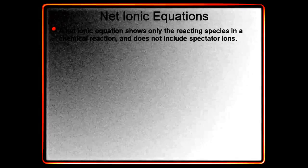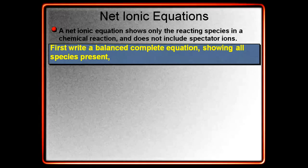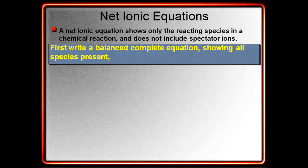So, there's a process you can follow to write this. First of all, you want to write a balanced, complete equation showing all the species present. You want to make sure that you show all of the reactants and that you show all of the products and that the equation is balanced.